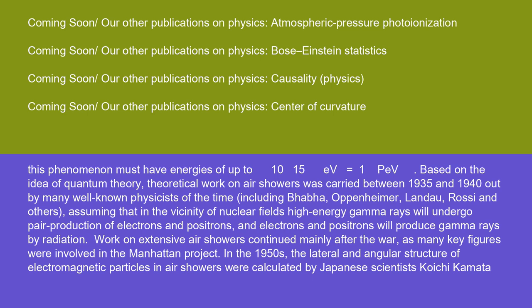Based on the idea of quantum theory, theoretical work on air showers was carried between 1935 and 1940 out by many well-known physicists of the time, including Bhabha, Oppenheimer, Landau, Rossi, and others, assuming that in the vicinity of nuclear fields high-energy gamma rays will undergo pair production of electrons and positrons, and electrons and positrons will produce gamma rays by radiation. Work on extensive air showers continued mainly after the war, as many key figures were involved in the Manhattan Project.